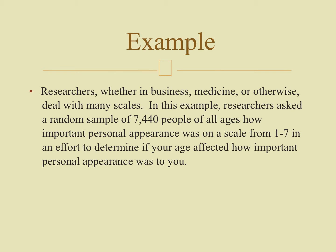Here's an example: researchers asked a random sample of 7,440 people of all ages how important personal appearance was on a scale from one to seven, to determine if age affected how important personal appearance was. Notice that age is one categorical variable and personal appearance rating is the other — two categorical variables in play, which creates the table that allows us to run this test.